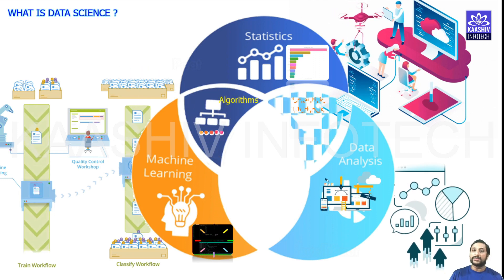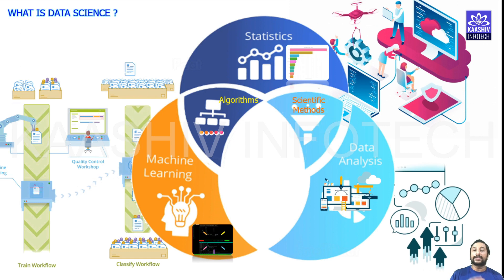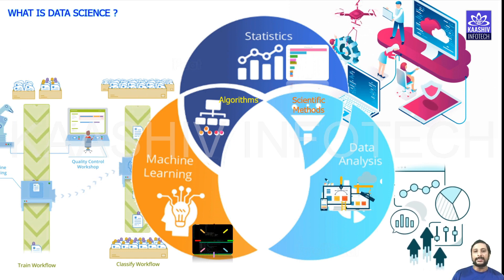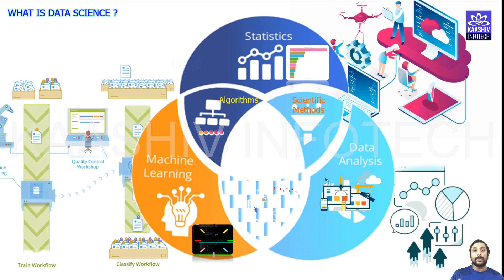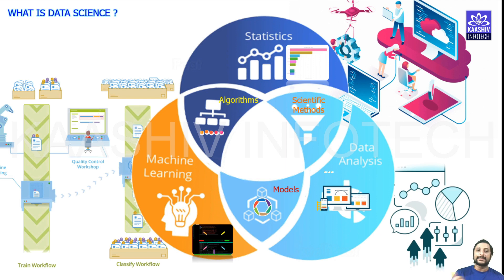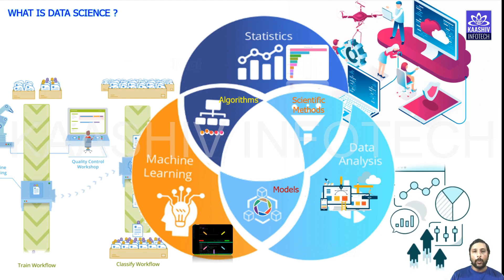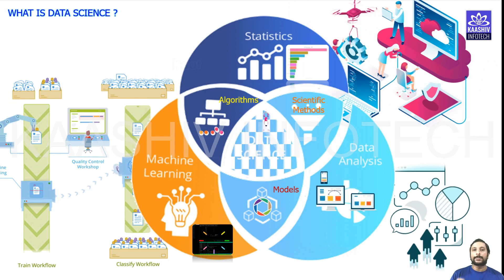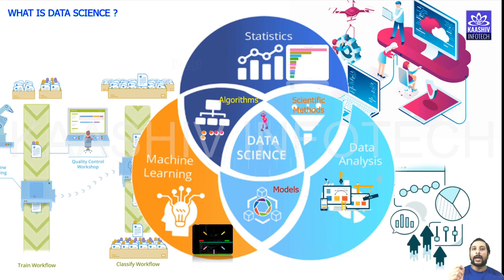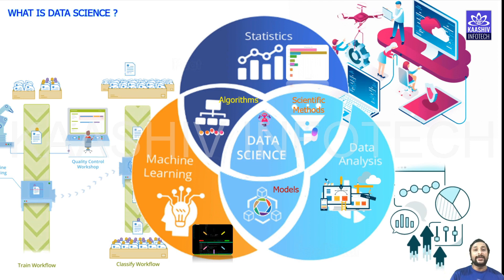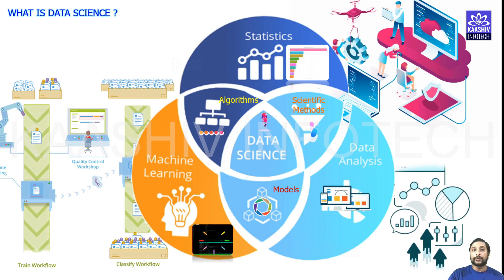The integration of statistics and machine learning is nothing but your algorithms, whereas the integration of statistics and data analysis is nothing but your scientific methods. Your data analysis and machine learning will create models. Data science is a combination of everything. That's where data science plays a very important role. It's one of the major trending technologies at present in the market, and next hundred years data science is going to rule the world.